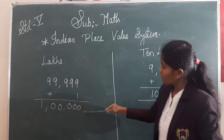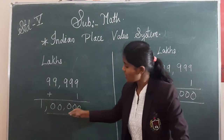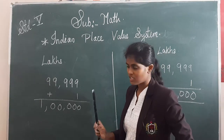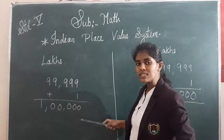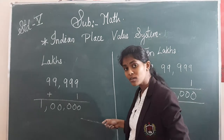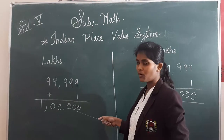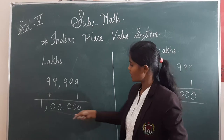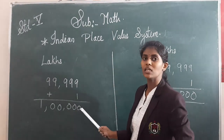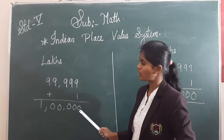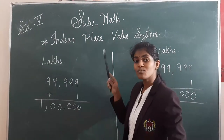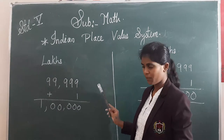So how many digits is this number? This number is of six digits. Is this the smallest number or the greatest number? One lakh is the smallest six-digit number. Keep this in mind always — one lakh is the smallest six-digit number.